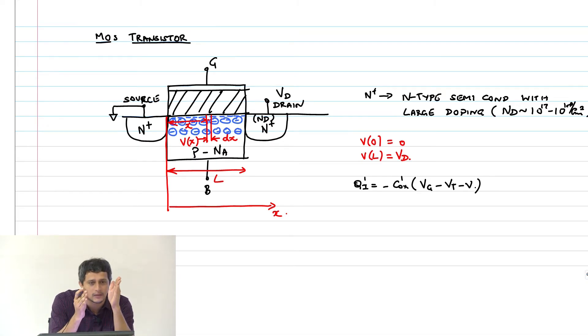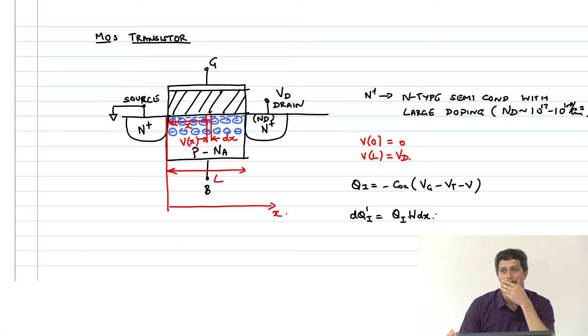So therefore, the net charge that is going to be available, qi prime, will be what? What did we say earlier? It is minus Cox prime into Vg minus Vt minus V. Because what is happening is at the source, the potential is whatever Vg minus Vt you apply, you will get that much of inversion charge. But as you go, that potential is going up in the channel also. So you will have Vgs minus Vt minus V.